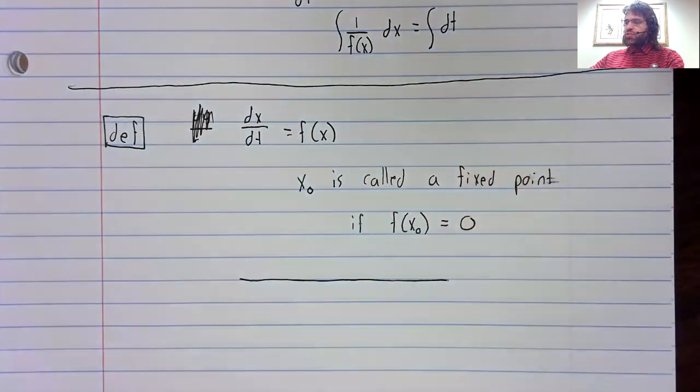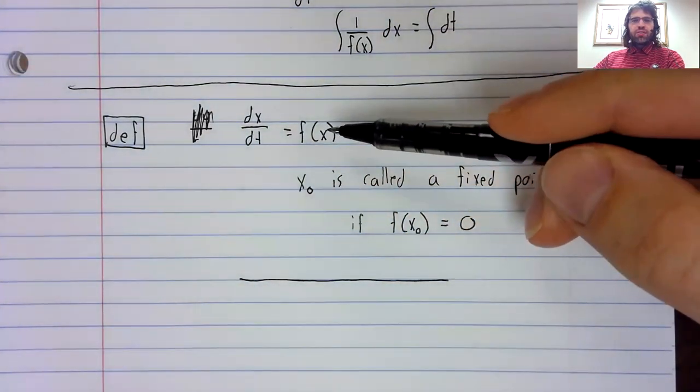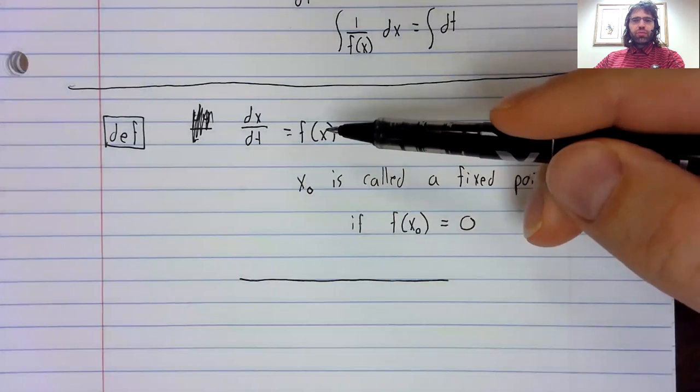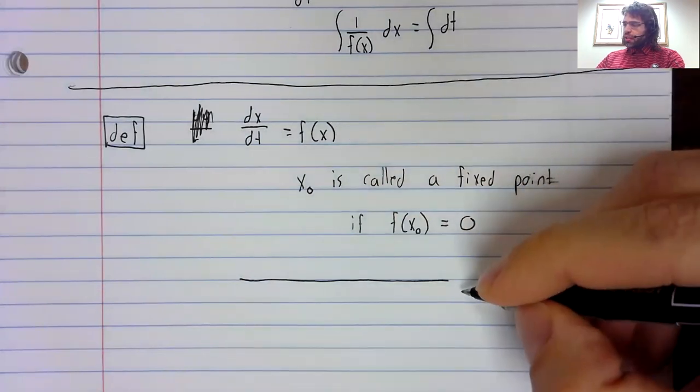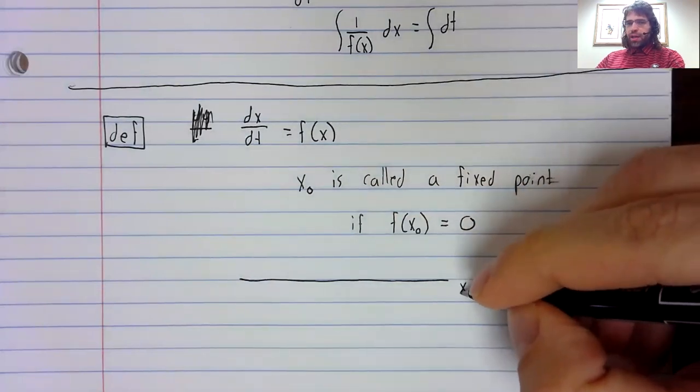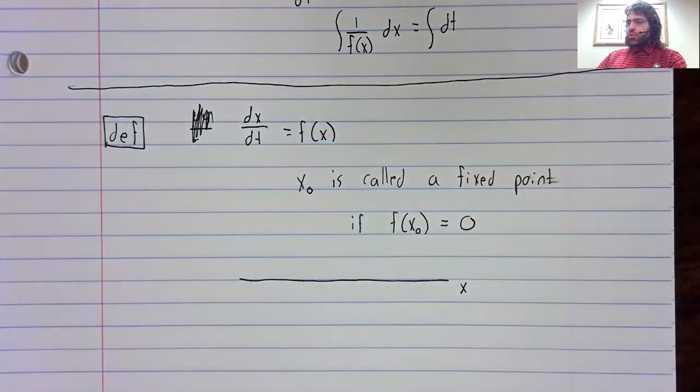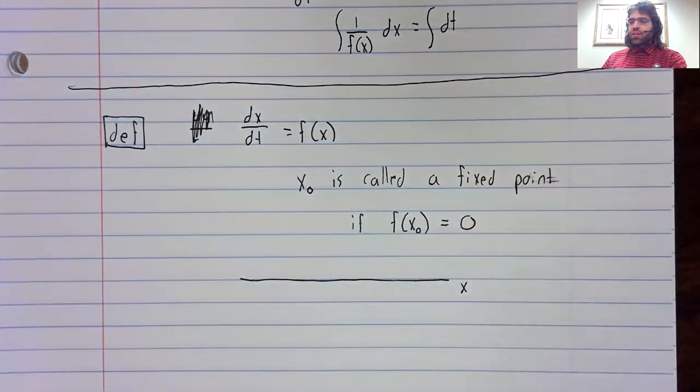Well, the easiest way to visualize an autonomous differential equation is a number line. So you've got your value x.